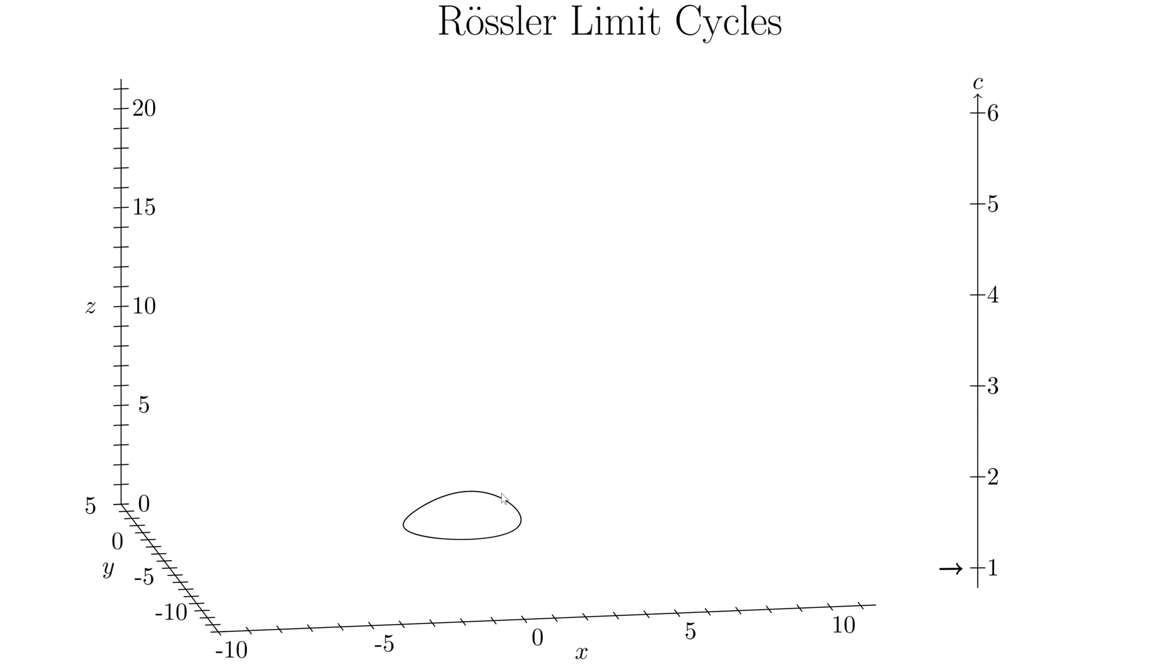So here we have a limit cycle. It's just all by itself. And it should be going around this way, I believe, so anticlockwise. And it's not very interesting. So it is attracting, it's stable. So there should be a fixed point somewhere around there.